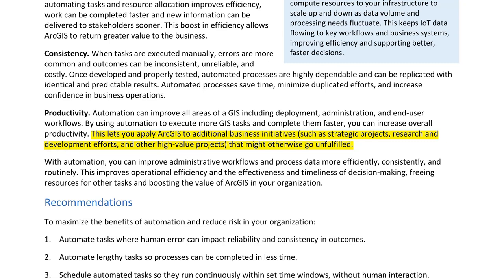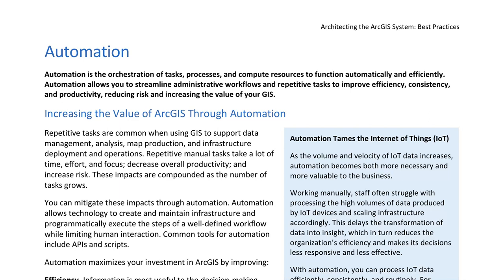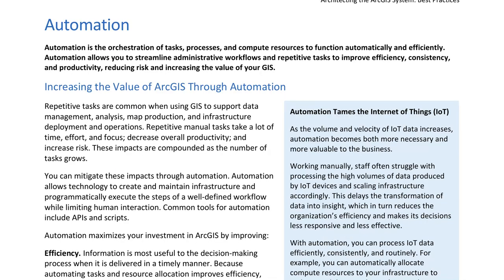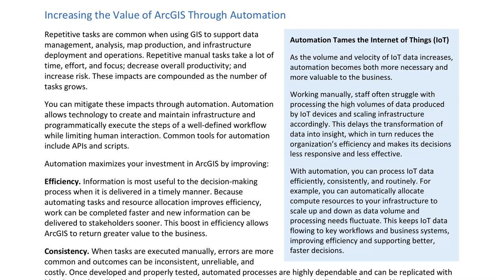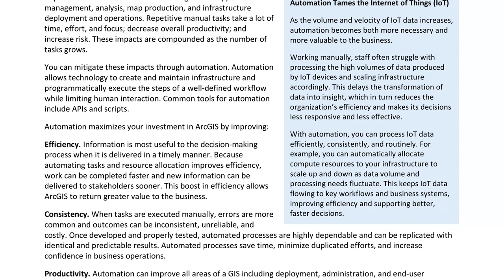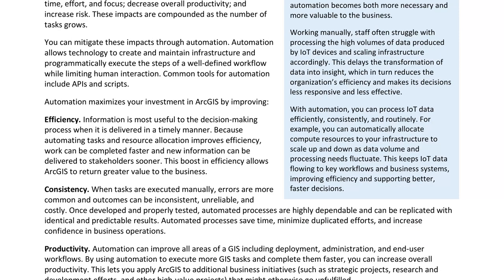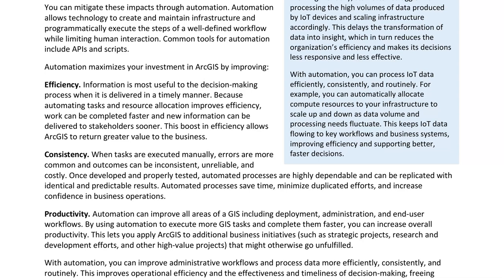This lets you apply ArcGIS to additional business initiatives, such as strategic projects, research and development efforts, and other high-value projects that might otherwise go unfulfilled. As the volume and velocity of IoT data increases, automation becomes both more necessary and more valuable to the business. Staff often struggle with processing the high volumes of data produced by IoT devices and scaling infrastructure accordingly, delaying the transformation of data into insight. With automation, you can process IoT data efficiently, consistently, and routinely — for example, automatically allocating compute resources to scale up and down as data volume and processing needs fluctuate.